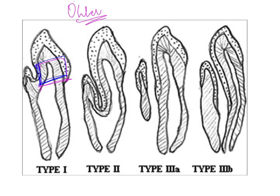Type 3 involves the entire pulp chamber and can be classified into two subtypes: Type 3a and Type 3b. In Type 3a there is a complete separation between the two fragments — meaning a tooth within a tooth. In Type 3b the secondary structure inside the tooth extends all the way to the apex of the root, involving the entire length of the pulp space, without separation from the main canal.